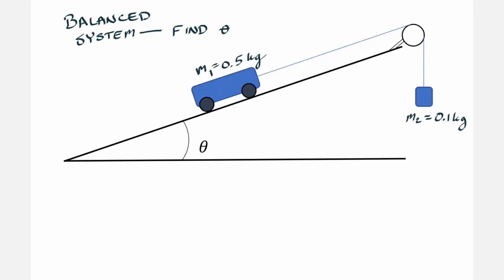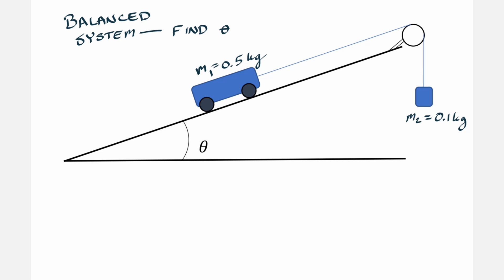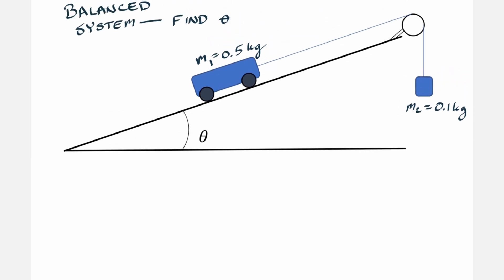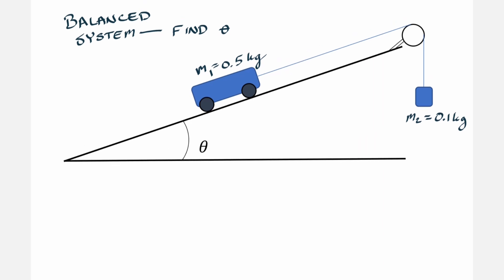I wanted to make a video today to address one of the biggest physics mistakes I see when students are solving physics problems. I have this really simple example where there's a cart on an inclined plane, a rope passes over the pulley, and there's a hanging mass on the right side. You are asked to find something like theta — this is a super common physics 1 problem. So let's go ahead and start solving it.